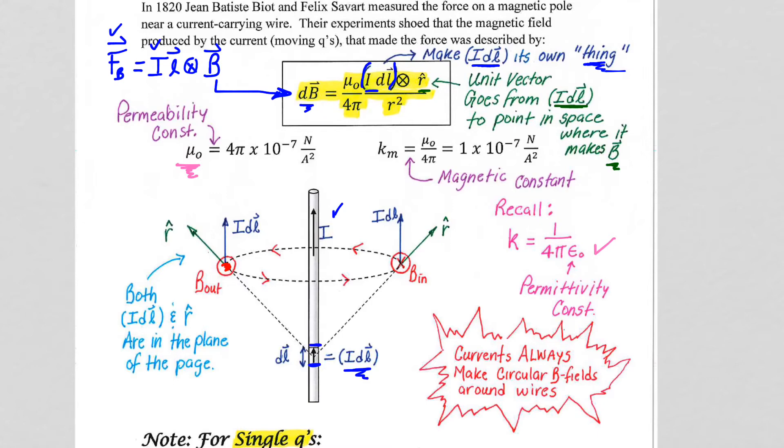So when we take a cross product, we draw the vectors from a common origin. So we take the IDL, and we take the R hat. We draw them from a common origin, and we make that common origin the point in space where the B field will be that the IDL produces. When we do IDL cross R hat, that is a thumb out of the paper, so that's a B field out.